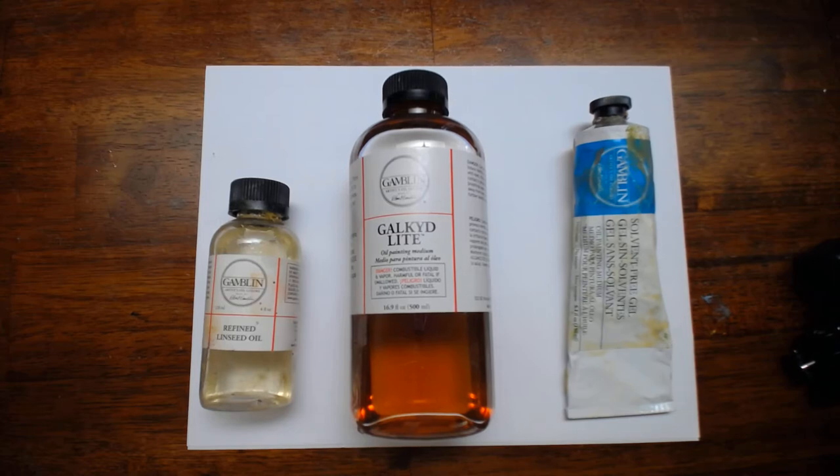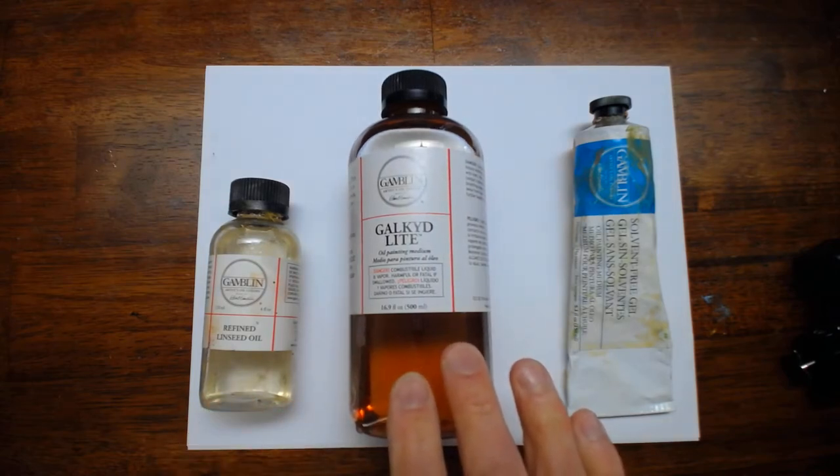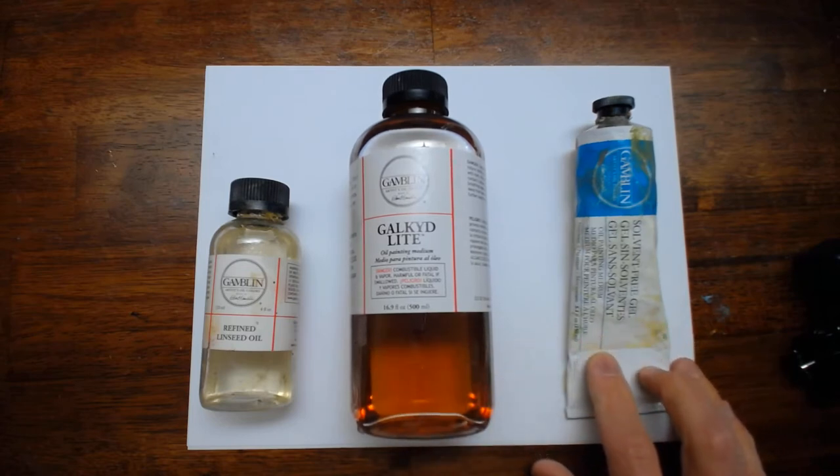This is a short video to explain the differences in some of the oil painting mediums that are available to us as painters. Here I've got refined linseed oil, an alkyd medium called galkid light, and a solvent-free gel.